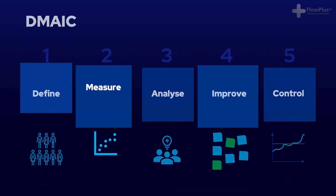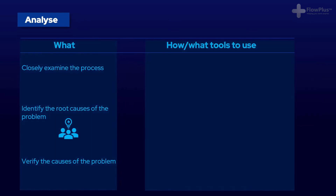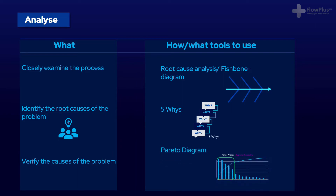Moving on to the analyze phase. Analyze is all about understanding the causes of the problem. It's very rare that a problem has one single cause — it is normally a combination of causes varying in significance. That is why tools such as root cause analysis and 5 Whys are so effective to identify these causes. A Pareto diagram can then be used to quantify and rank the causes to ensure that the most significant ones are addressed first.